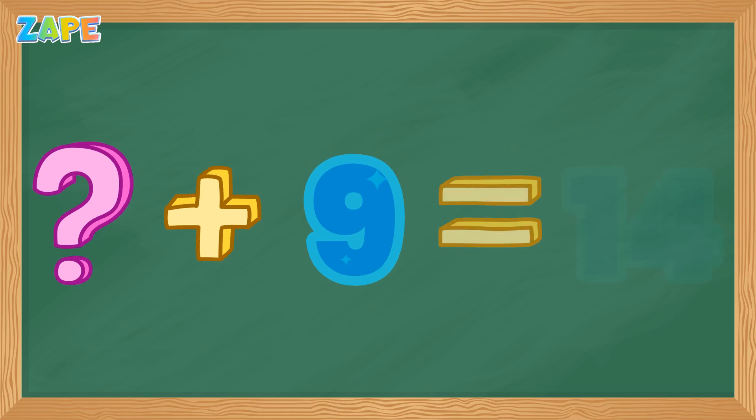Look here. Hmm, something's missing. We see this: missing value plus 9 equals 14. What could that missing number be? Let's find out.